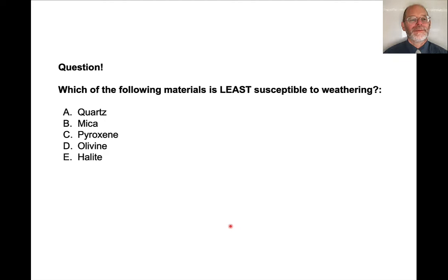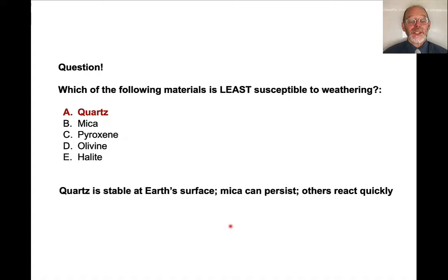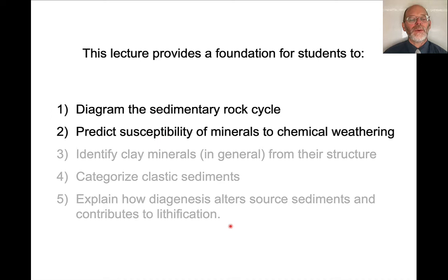Which of the following materials would be least susceptible to weathering? The answer is quartz. Quartz is stable at Earth's surface. Micas can persist — especially muscovite — but the others react very quickly. At this point, I hope students would be able to say something about the sedimentary rock cycle and talk about the susceptibility of minerals to chemical weathering.